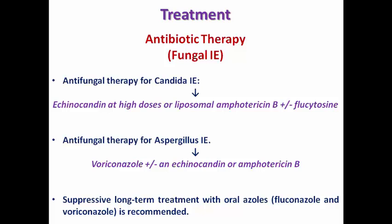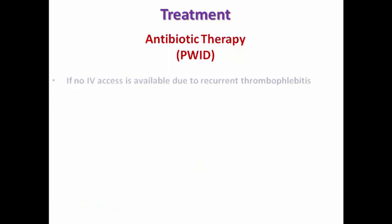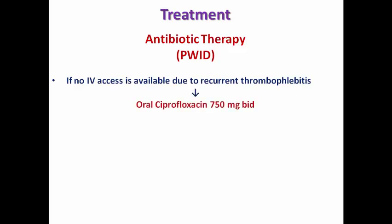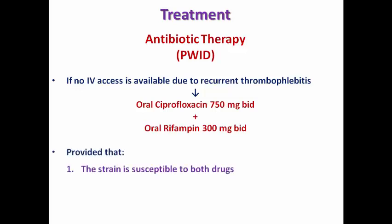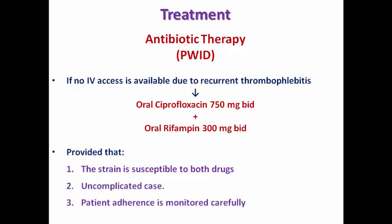Some people who inject drugs may have no IV access due to recurrent thrombophlebitis from drug injection. In uncomplicated cases where the strain is susceptible, oral antibiotics such as ciprofloxacin 750 mg twice daily plus rifampicin 300 mg twice daily may be prescribed with monitoring of patient compliance. If the patient is improving, outpatient treatment can be continued as discussed in the treatment of infective endocarditis video.